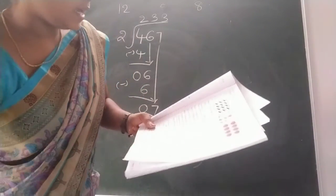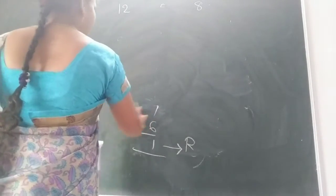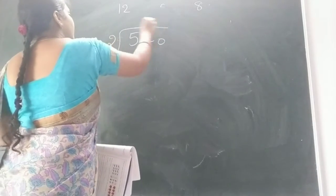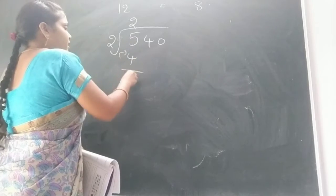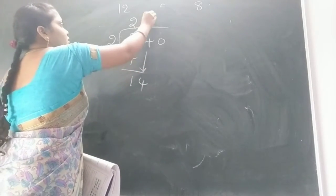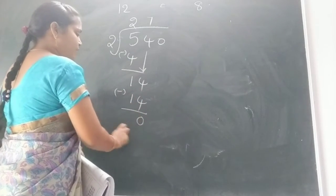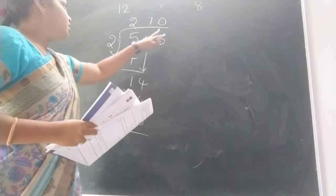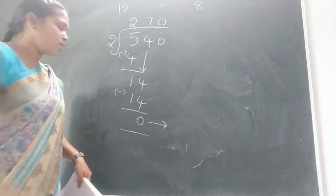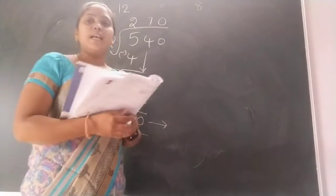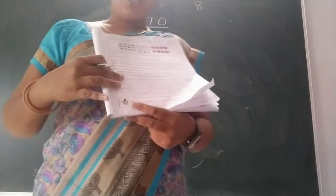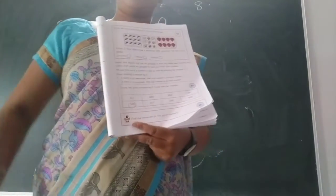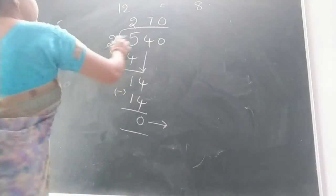Like that, you have to identify, children. I am taking another number: 540. You have to circle only even numbers. Divide 540 by 2 — 2 twos are 4, 5 minus 4 is 1. Bring down more: 2 sevens are 14, so here 0 is there, write 0 in quotient. What is the remainder, children? 0. So if there is no remainder, it is an even number. Means 540 is an even number — circle 540. Like that, you have to identify which numbers are even.